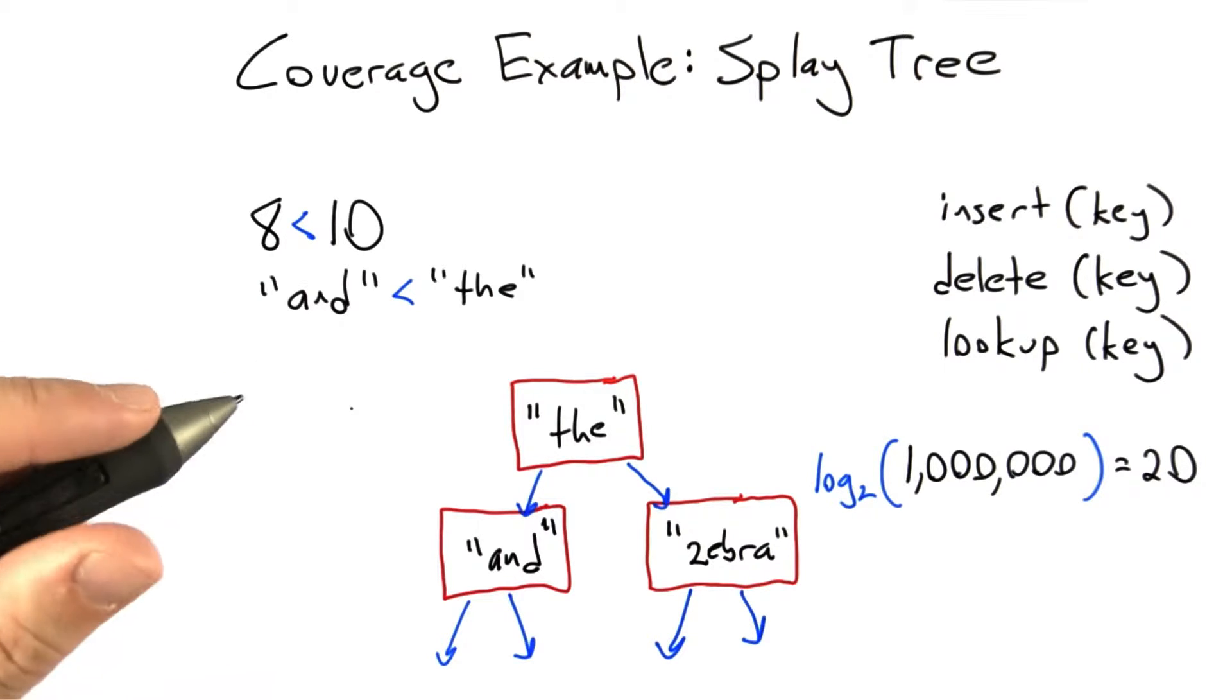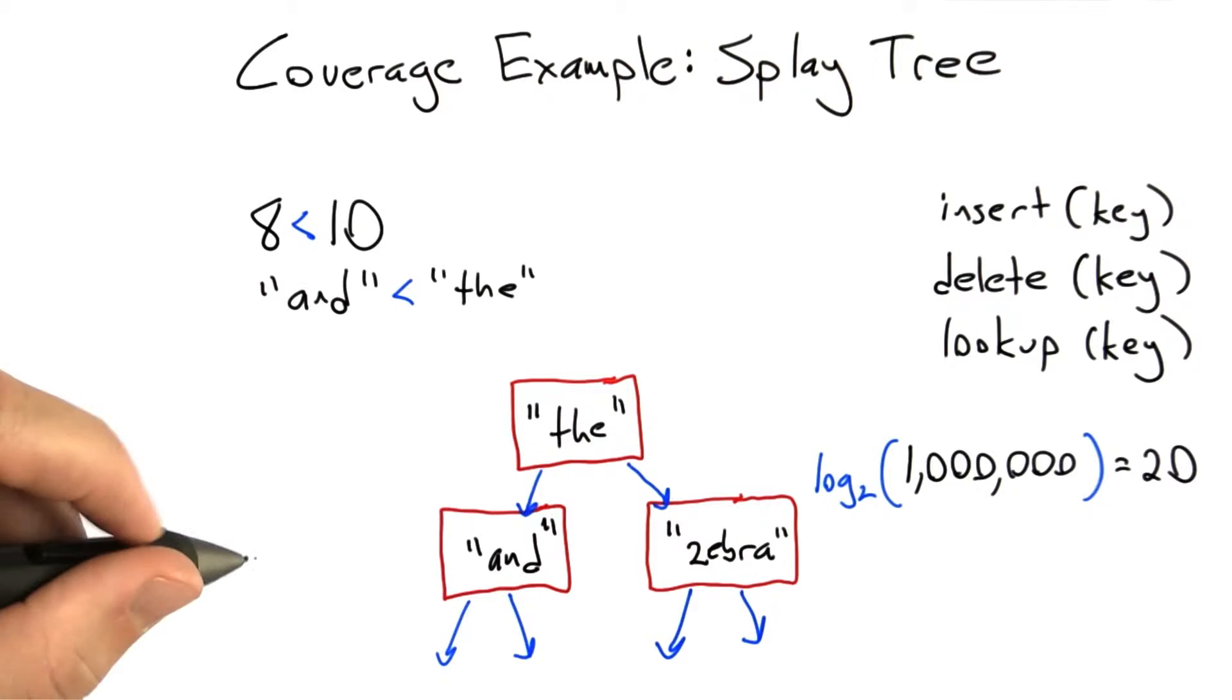Which means that if we insert nodes in sorted order, normally in a binary search tree, that would cause us to build a tree that looks something like this. And so as you can see, this is a very bad kind of a binary search tree.